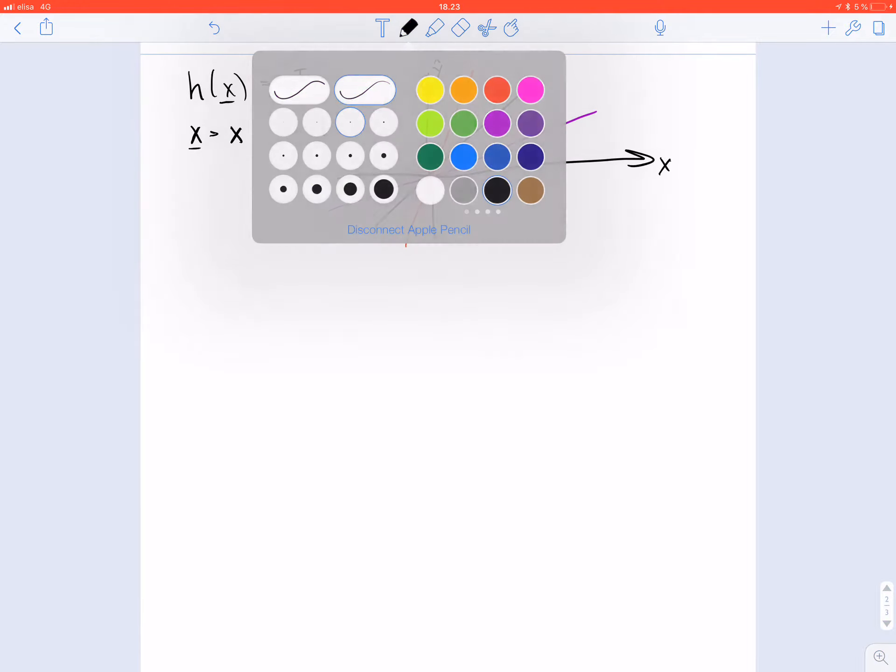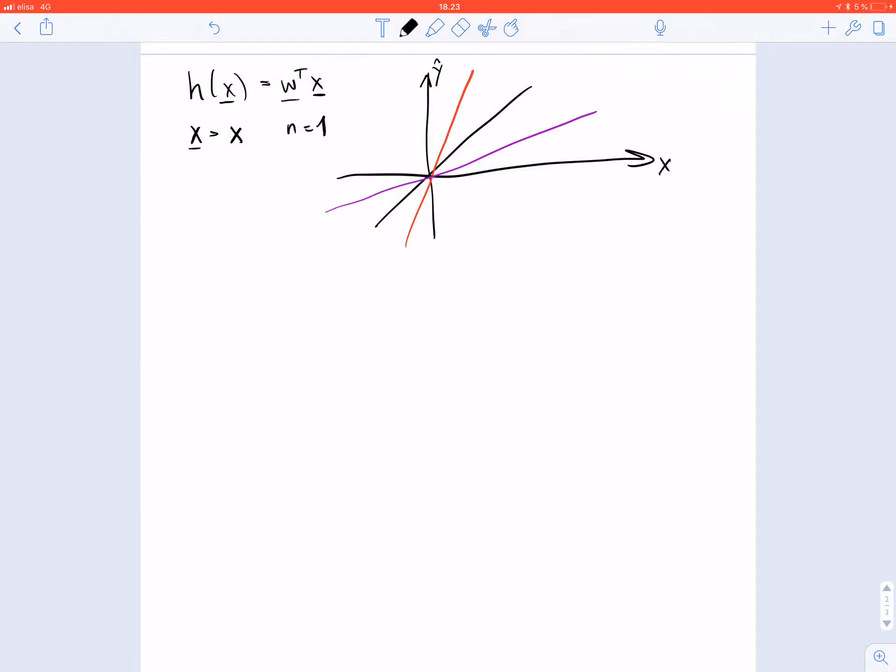Therefore we sometimes need to consider non-linear hypothesis spaces. One example for a non-linear hypothesis space is obtained by decision trees. A decision tree is like a flowchart representation of a map. We start with the feature at the input and then we apply tests on the feature.